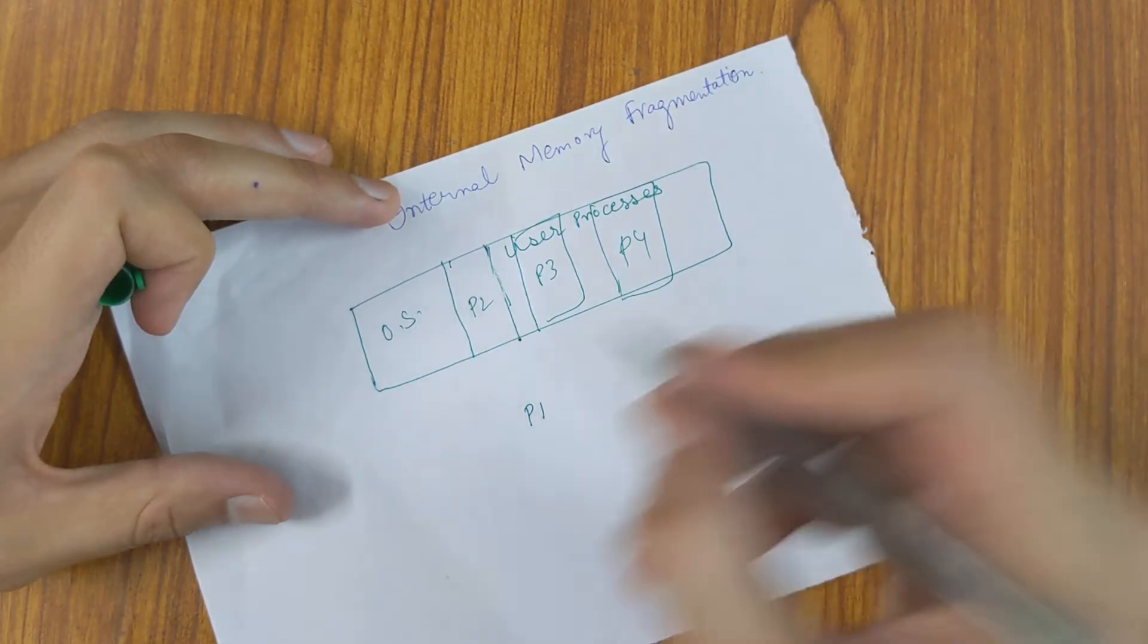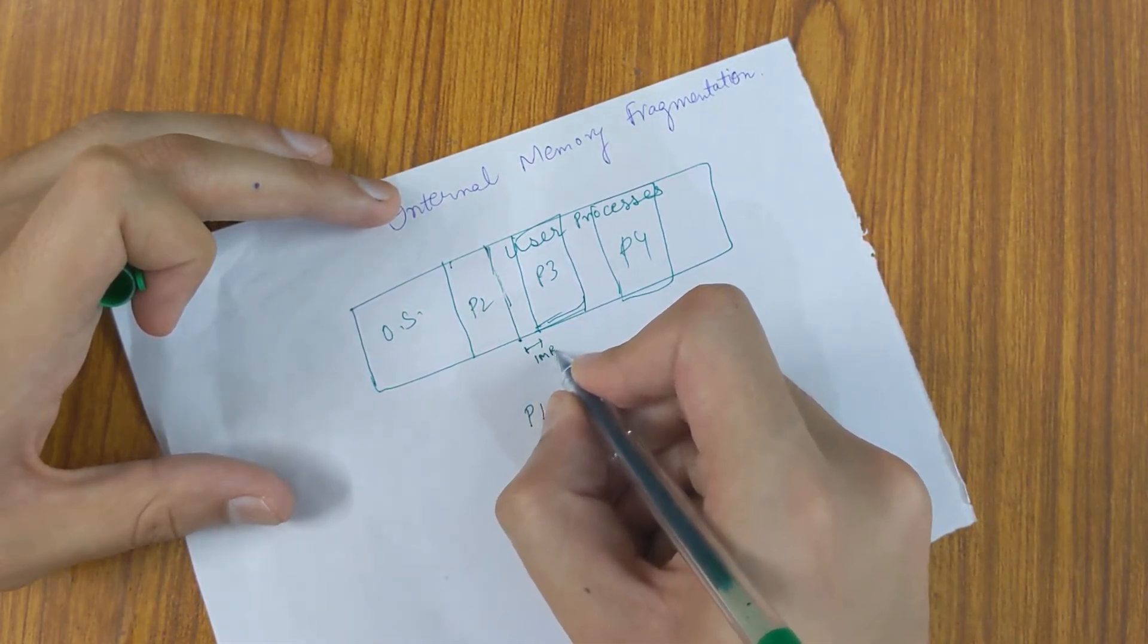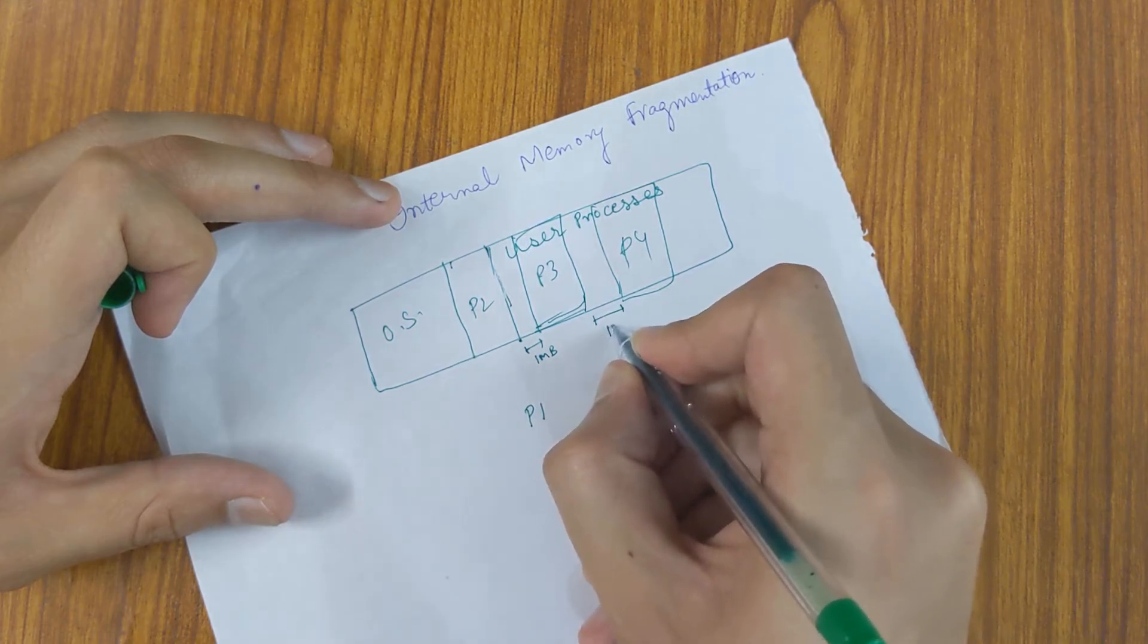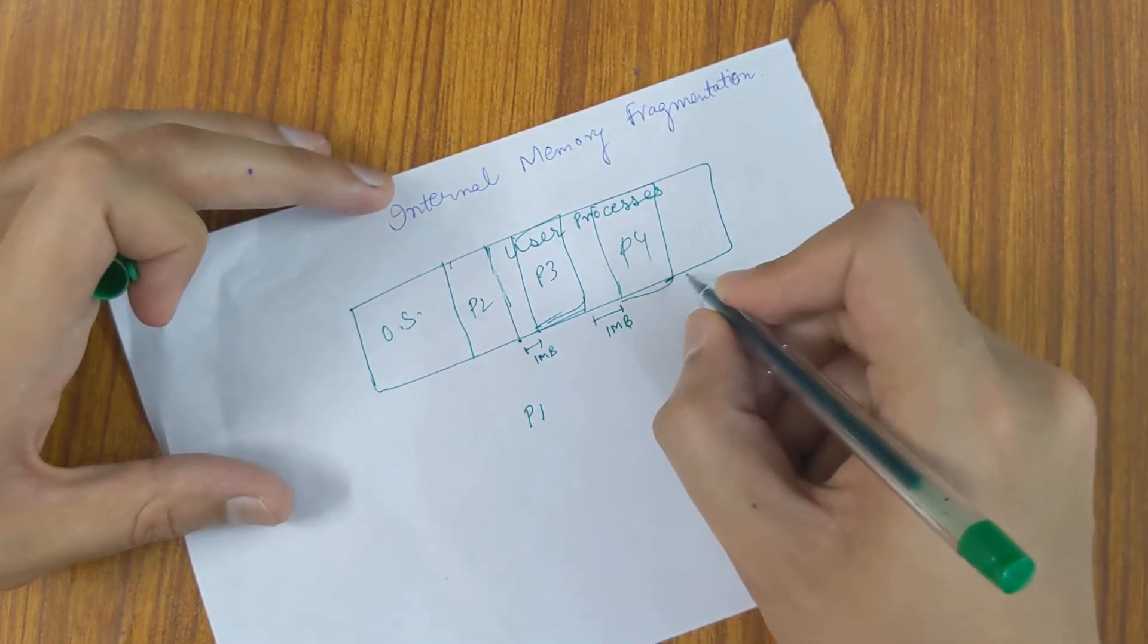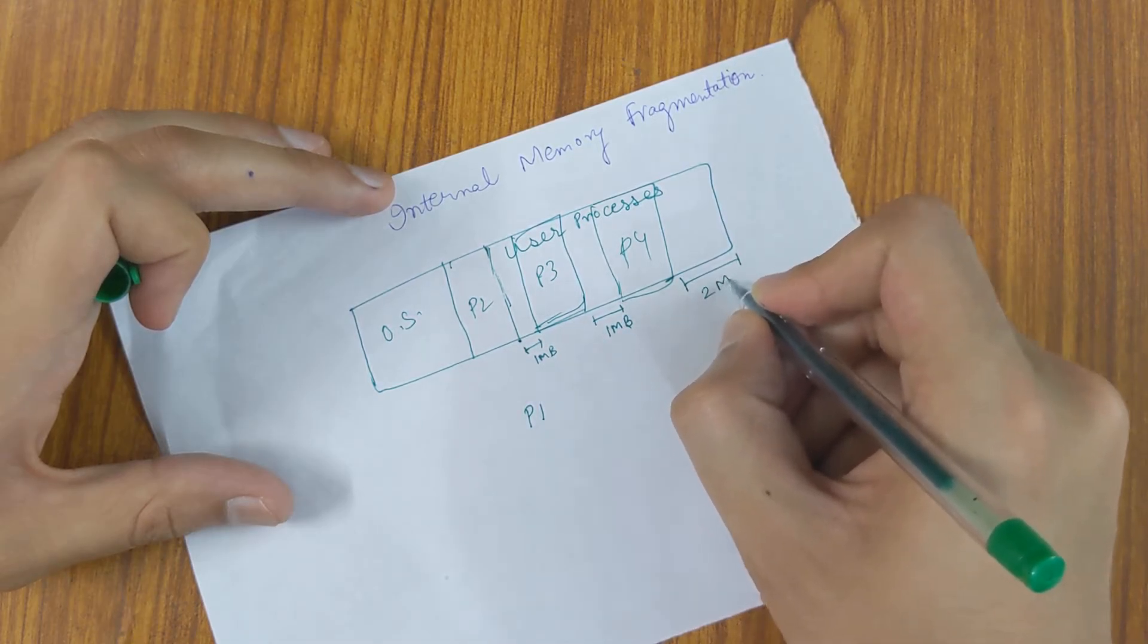Let's say this much and we have some, this is 1 MB hole left, this is 1 MB hole left and let's say this is a 2 MB of hole.